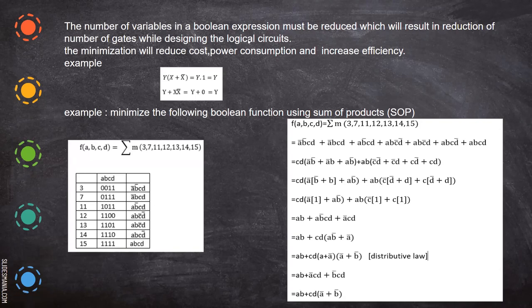The number of variables in a Boolean expression can be reduced, which will result in a reduction in the number of gates. For example, where you need four AND gates, you may need only one or two AND gates after reduction.